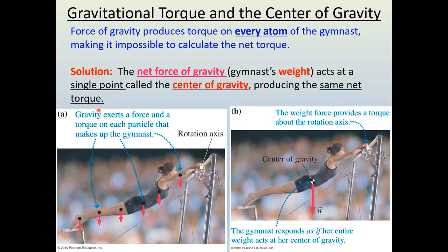Well, the good news is there is a nifty trick here. The solution is to use something called the center of gravity. The net force of gravity — in other words, the gymnast's weight — acts at a single point in her body called the CG, or center of gravity, producing the same net torque. So we can simplify the diagram with one single torque produced by the gymnast's weight, which is just mg, acting at her center of gravity. This is a major step in handling gravitational torques of extended objects.